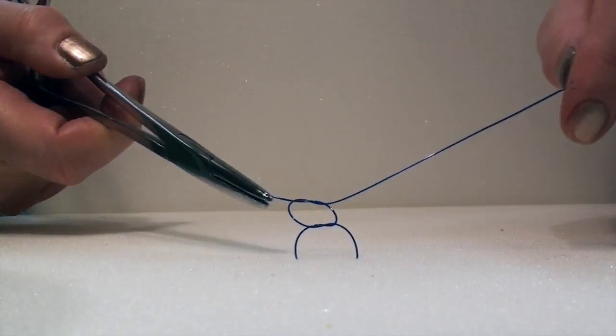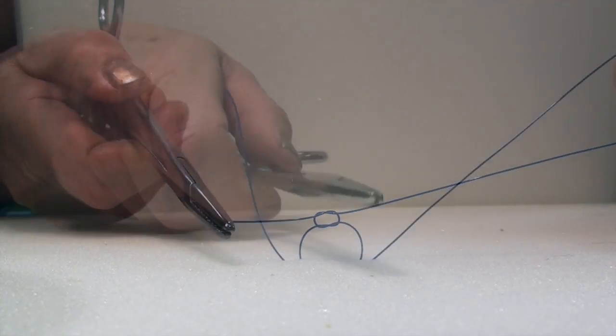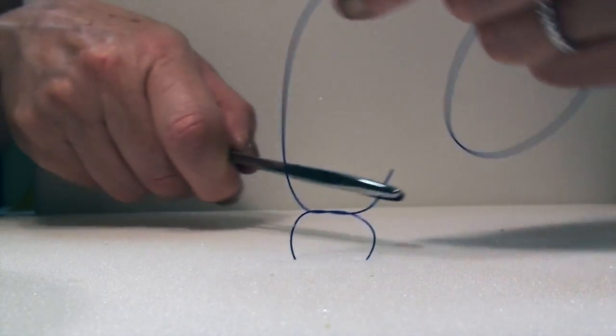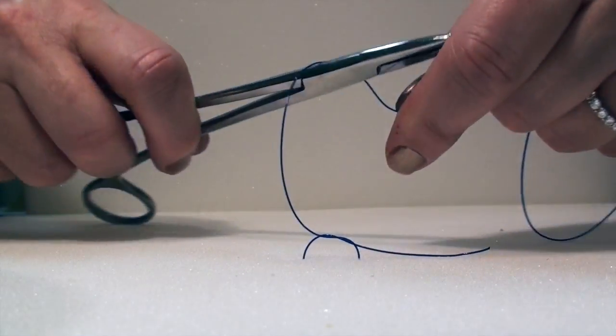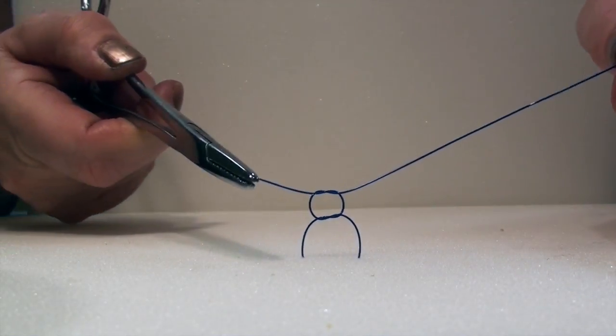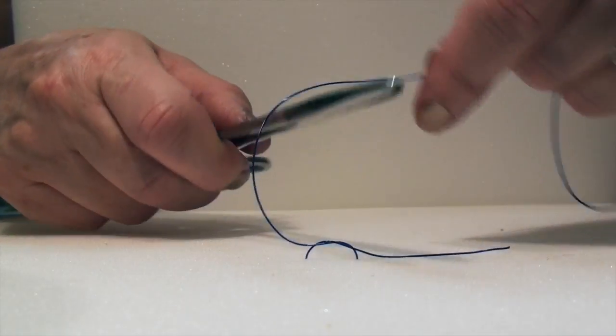And now you have a perfect square knot. When creating a square knot, your short end will start on one side, move to the other side, and then go back to the original side on the second throw. When creating a slip knot,